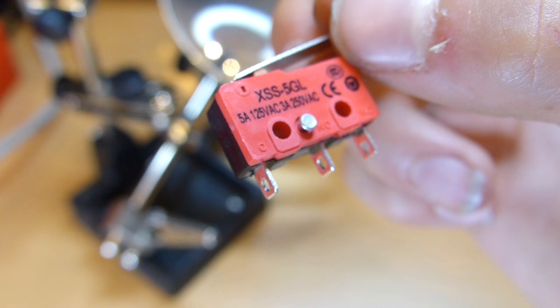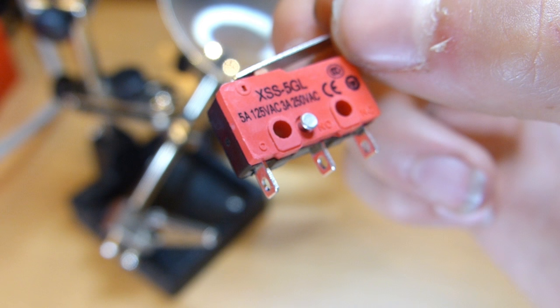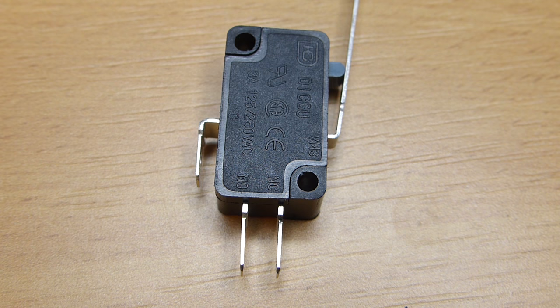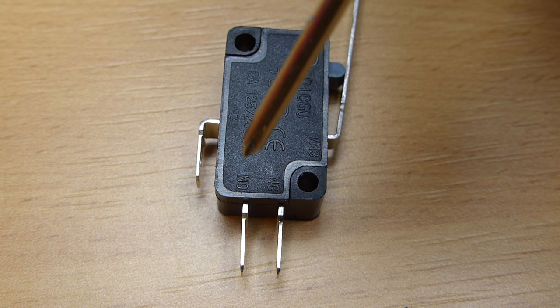If you look closely just above the soldering tabs, you will see that there are some letters. One should say C or COM, which stands for common. One should say NO for normally open, and one should say NC for normally closed. On these micro-switches, the side tab is always the common, and the normally open and normally closed are at the bottom.